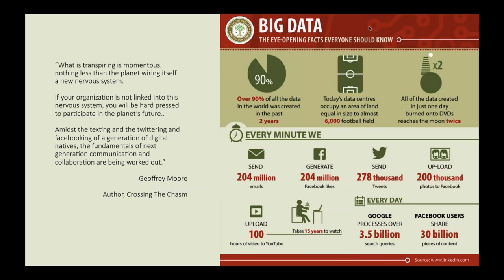I'd like to share some interesting information. You may have heard of author Geoffrey Moore, who wrote Crossing the Chasm. He made an interesting point about how the whole rewiring of the planet is happening — a new communication and collaboration environment is getting set up. Over 90 percent of the world's data was created in the past two years. Today's data centers occupy an area of land equal in size to almost 6,000 football fields. Every minute we're sending 204 million emails and 278,000 tweets. The magnitude of this is really what I think is interesting.